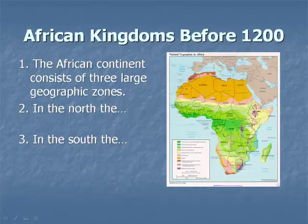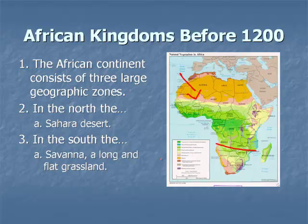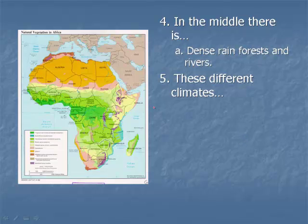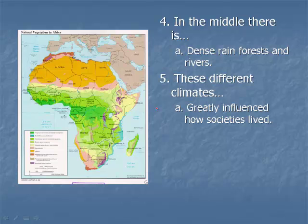The African continent is split into three separate zones. In the north you have the Saharan Desert. In the south you have the savannah, which is a long and flat grassland. In the middle you have dense rainforests and rivers. Just like in the American continents, people adjust to these different climates, so the societies are different and the way that they live is different. These different climates in Africa greatly influenced how societies lived.